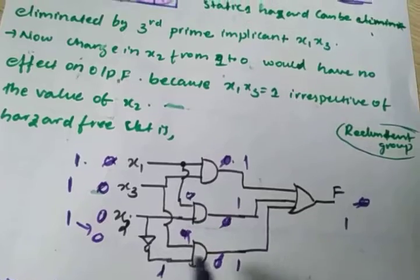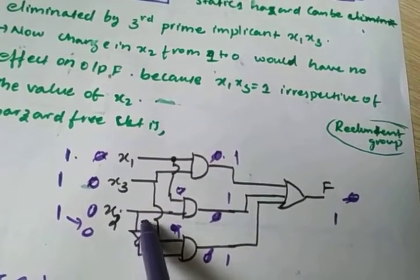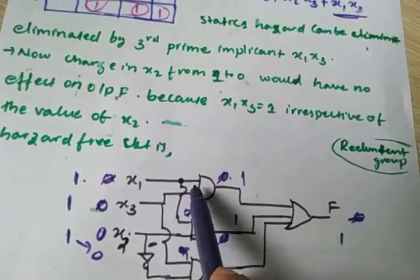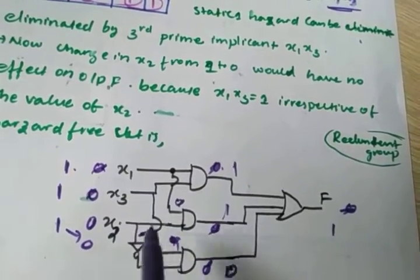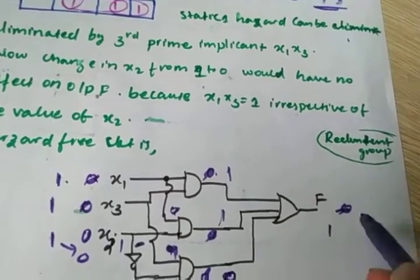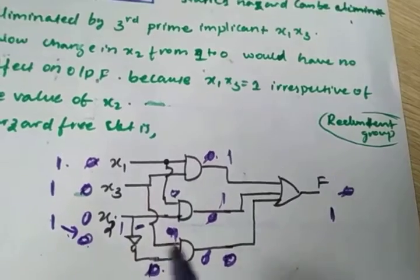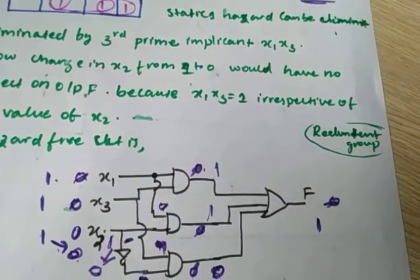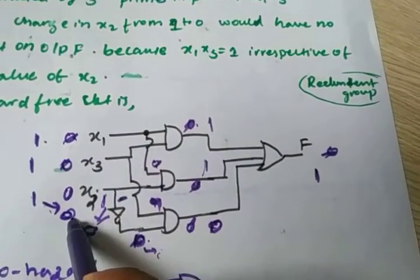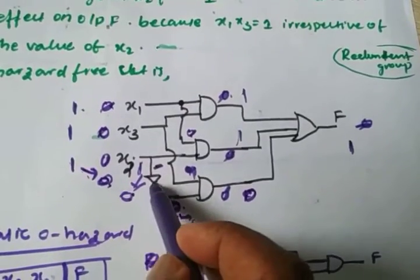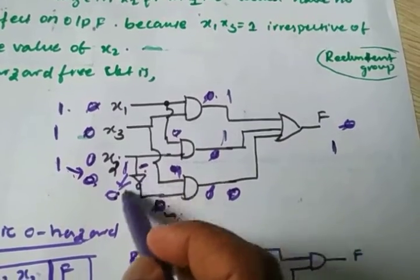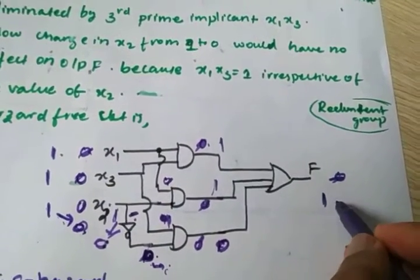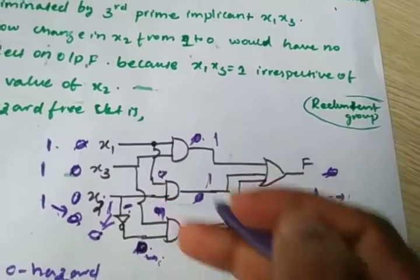Now x2 changes from 1 to 0. Initially x1x2 was 1; now with x2=0 it becomes 0. But x1x3 is 1 since x1=1 and x3=1, always 1 regardless of x2. Due to propagation delay, the x2_bar change may not propagate instantly, but since x1x3 remains 1, the OR gate always has at least one input as 1.